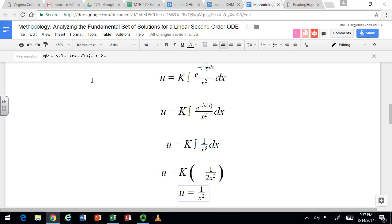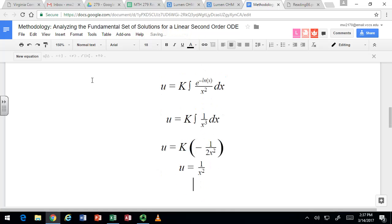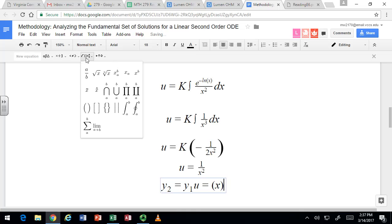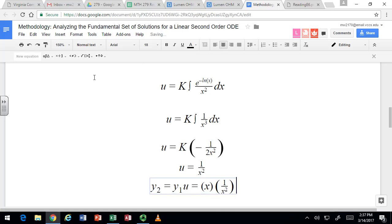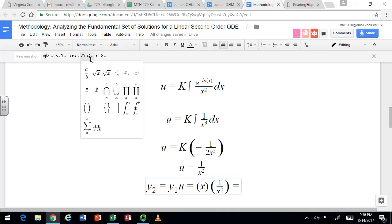So this isn't the other solution. This allows us to get the other solution. The other solution was y₁ times u. y₁ was x and u is 1/x². So the other solution that we found is 1/x.